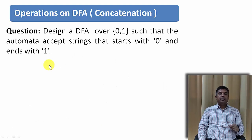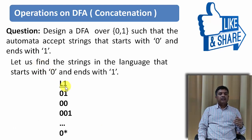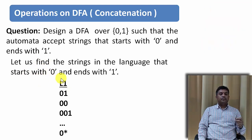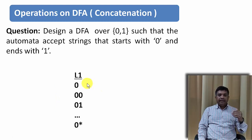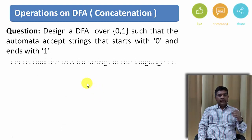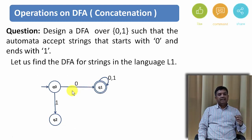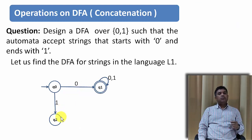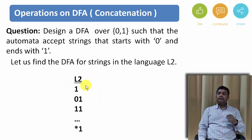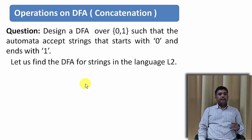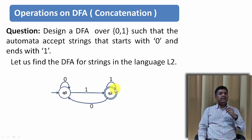For better understanding let us do a problem. These are the strings that start with 0, and these are the strings that end with 1. Let us find the DFA one by one. For language L1 that starts with 0, this is the DFA. There is also a dead state loop since in the dead state any number of inputs will keep it in the dead state. For the other language L2 ending with 1, this is the required DFA.